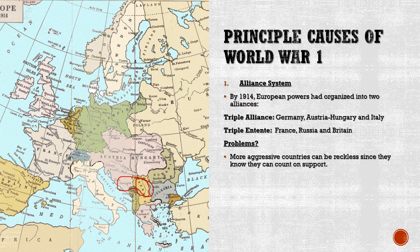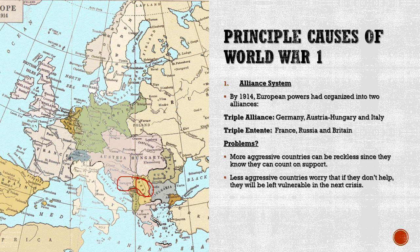In this instance the aggressive country is Austria-Hungary. Germany had become much more powerful overnight as an industrialized region, while Austria-Hungary was not as powerful as before. But Austria-Hungary was eager to reclaim some of that glory, knowing Germany had their back, so they could afford to be reckless and immediately react to the assassination by declaring war on Serbia. On the other hand, less aggressive countries — like Germany at the beginning — worry that if they don't help their allies, they'll be left vulnerable in the next crisis. This is what leads us into World War One.